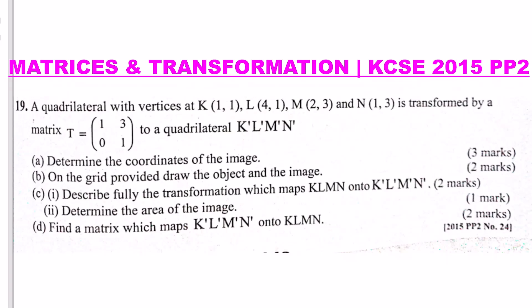A quadrilateral with vertices K(1,1), L(4,1), M(2,3), and N(1,3) is transformed by a matrix T = [1, 0; 3, 1] to a quadrilateral. The image is given as K', L', M', N'.